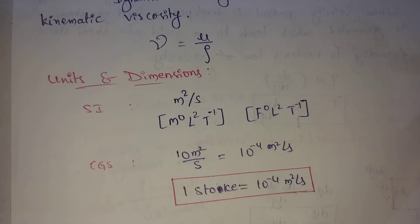One Stoke equals one centimeter squared per second. Therefore, 1 Stoke equals 10 power minus 4 meter squared per second.